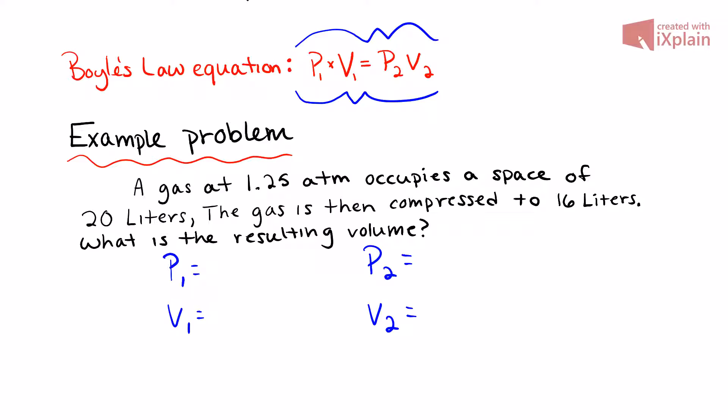A gas at 1.25 atmospheres occupies a space of 20 liters. So right off the bat we know that our starting pressure P1 is 1.25 atmospheres, and our starting volume V1 is 20 liters. The gas is then compressed to 16 liters, so our final volume V2 is 16 liters.